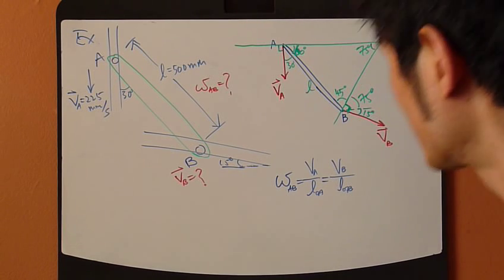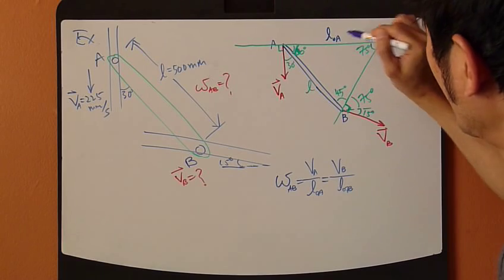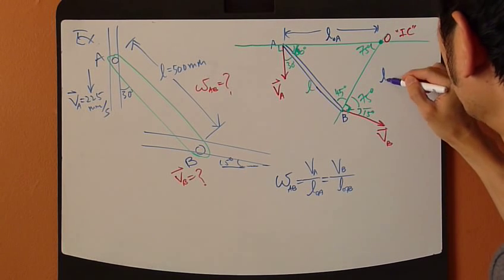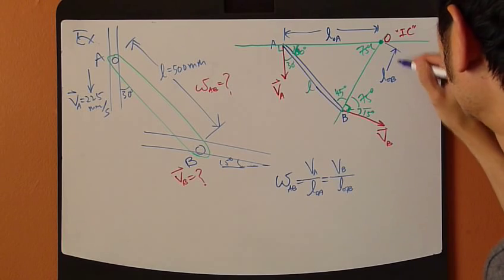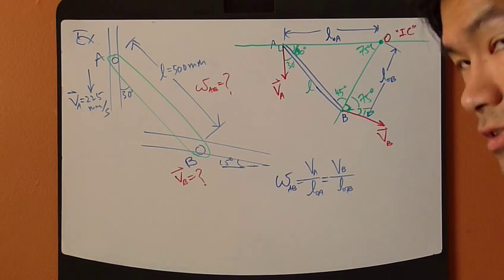So, now, all we need to figure out is this length right here, LOA, right? And, LOB. By using this triangle. So, how do we do it? Sine rule.